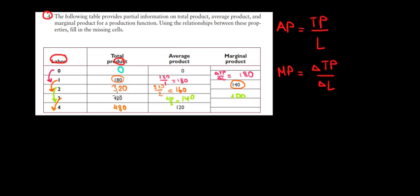Now, how much did it change from the previous total product? It changed by 60. From 420 to 480, we increased the additional, the marginal product by 60. And that's it. We are done.